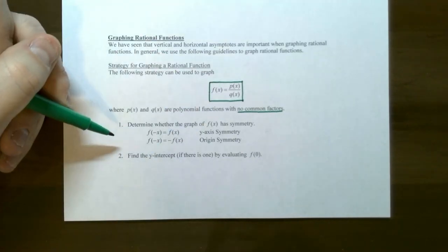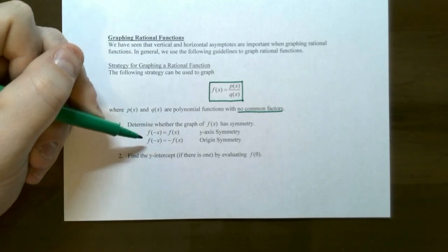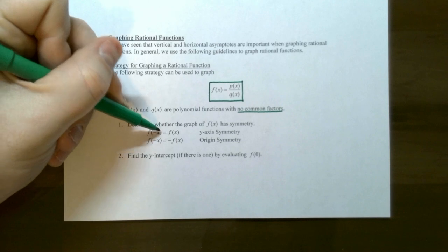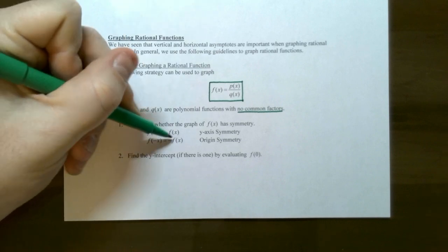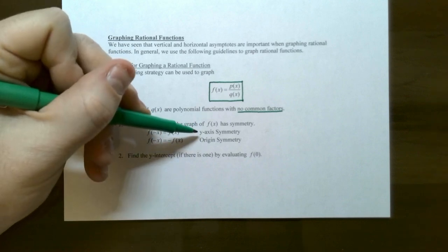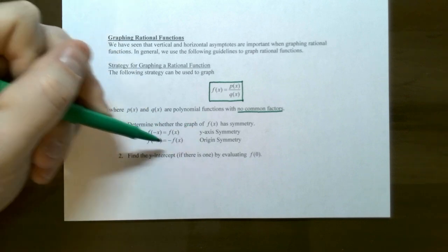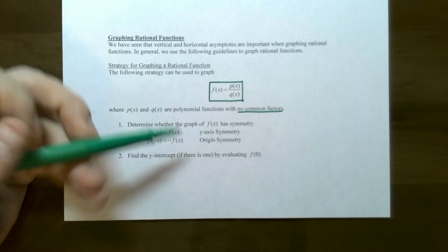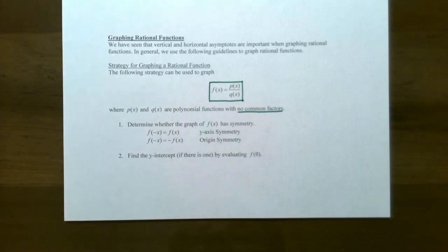The first thing you can do is look to see if there's any symmetry — which doesn't happen very often — by replacing x with negative x. If the function stays the same, the graph will have y-axis symmetry. If it turns out to be the opposite of the original function, the graph has origin symmetry.